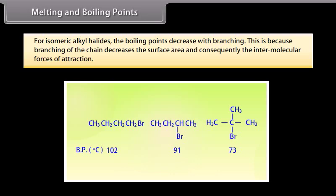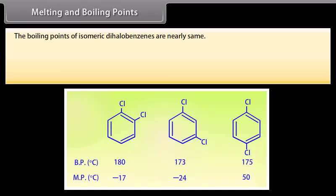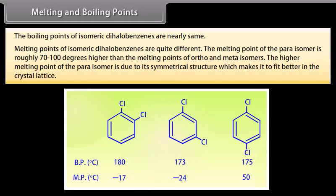Melting and Boiling Points. For isomeric alkyl halides, the boiling point decreases with branching. This is because branching of the chain decreases the surface area and consequently the intermolecular forces of attraction. The boiling points of isomeric dihalobenzenes are nearly the same. The melting points of isomeric dihalobenzenes are quite different. The melting point of the para-isomer is roughly 70 to 100 degrees higher than the melting point of ortho- and meta-isomers. The higher melting point of the para-isomer is due to its symmetrical structure which makes it fit better in the crystal lattice.